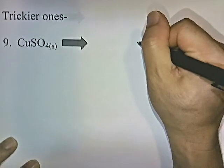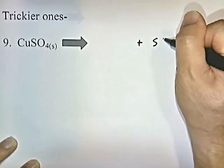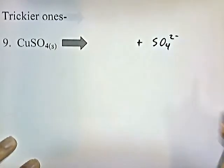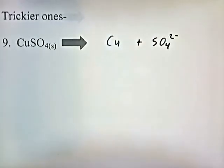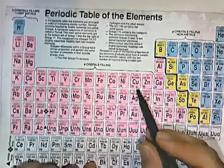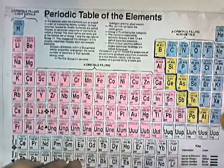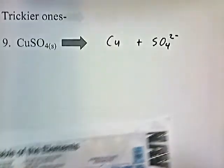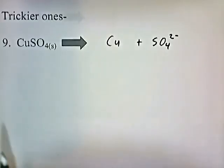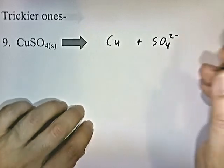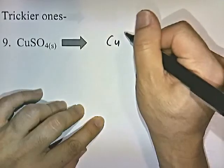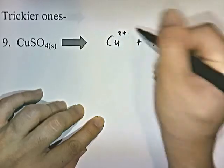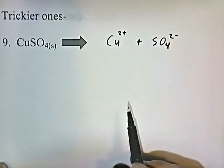Copper sulfate is a little bit trickier. SO4 has a negative 2 charge. CU is copper — copper is a transition element with variable oxidation states, so it could be plus 1 or plus 2. Since the total charge in an ionic compound is zero, and sulfate has a negative 2 charge, copper has to have a plus 2 charge. That's how you figure out the charge of a transition element — you see what it's attached to.